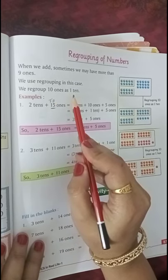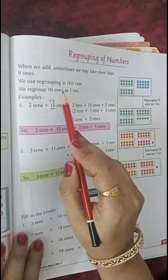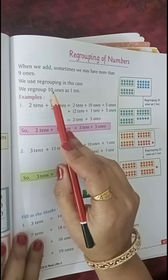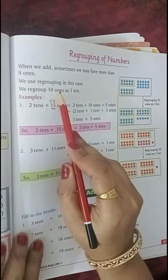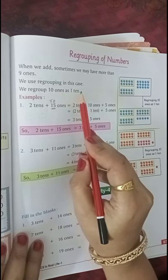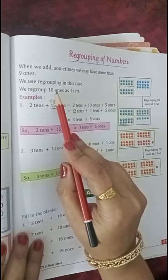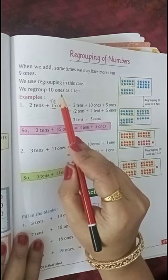We regroup 10 ones as 1 ten. I have already taught you this concept. 10 ones is equal to 1 ten.